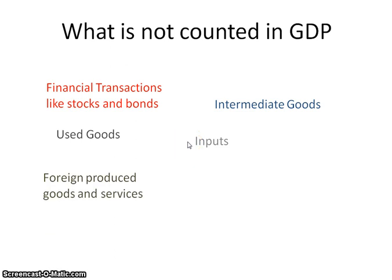Used goods are not counted because GDP measures final goods and services — used goods have already been counted the first time they were sold. Foreign-produced goods and services are excluded because gross domestic product only counts things produced within the United States. Government transfer payments, like welfare, Social Security, or Medicare, are also not counted since no actual product is being created or bought.